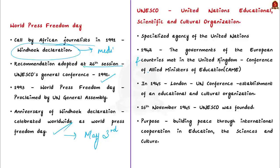UNESCO was established after a United Nations Conference for the establishment of an educational and cultural organization, which convened in London in 1945. UNESCO was founded in November 1945. It seeks to build peace through international cooperation in education, sciences, and culture. UNESCO stands up for freedom of expression as a fundamental right and endorses it as a key condition for democracy and development. That is why it also celebrates World Press Freedom Day.